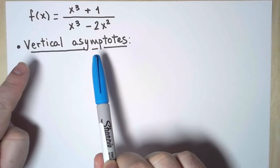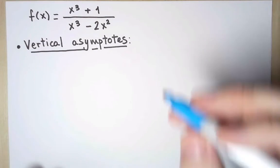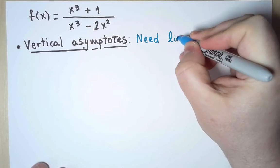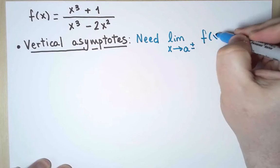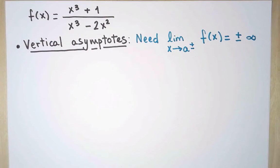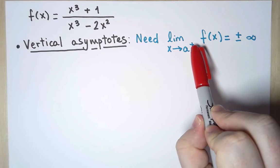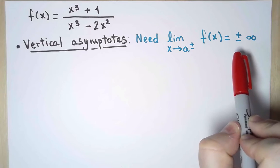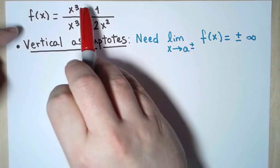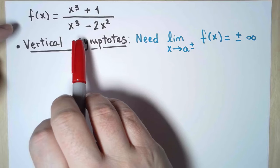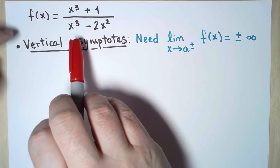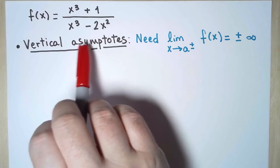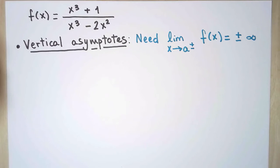First, I will look for vertical asymptotes. To have a vertical asymptote, I need the limit at some point to be plus or minus infinity. It is enough to have just one of the two side limits on the right or the left to be plus or minus infinity. In this case, the function is rational, a quotient of polynomials. So it is well-defined and continuous everywhere on the reals, except when the denominator is zero. Those are the only points where I may have a vertical asymptote.